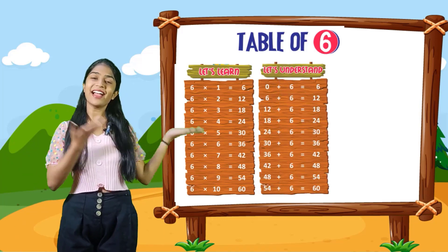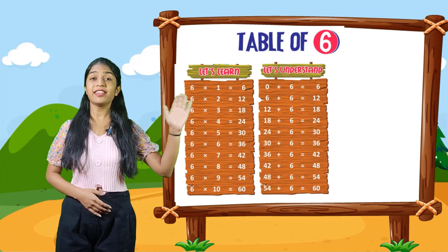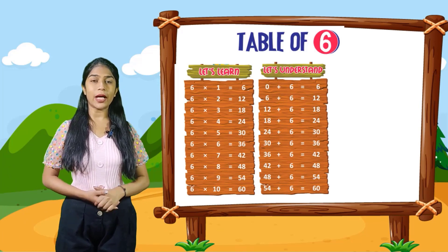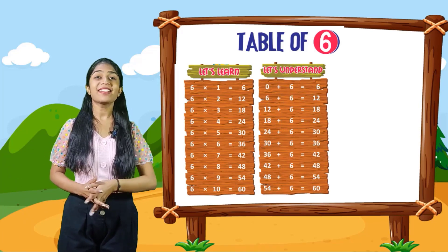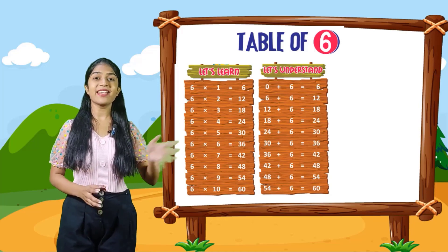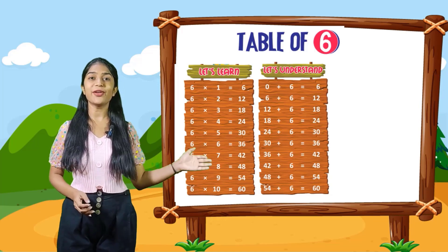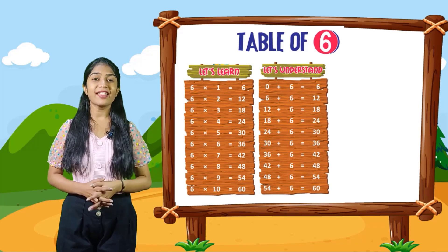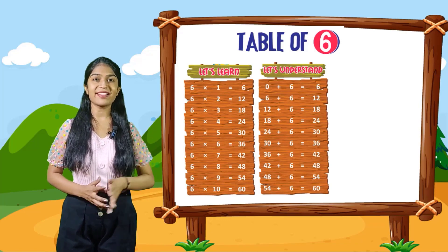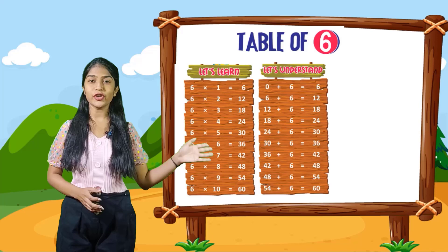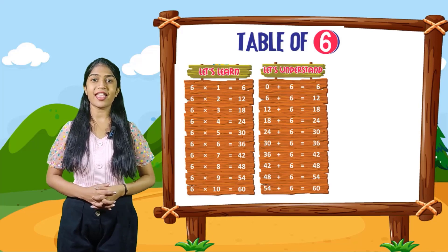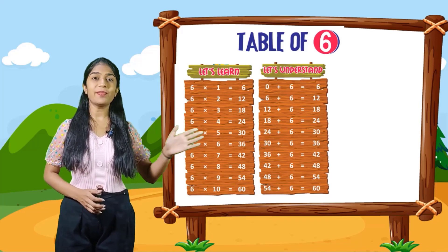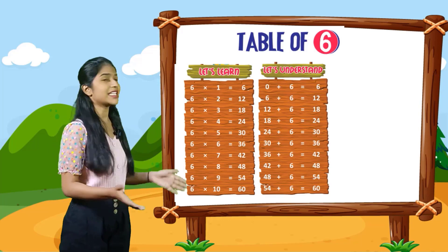So now let's understand. 0 plus 6 is equal to 6. 6 plus 6 is equal to 12. 12 plus 6 is equal to 18. 18 plus 6 is equal to 24. 24 plus 6 is equal to 30. 30 plus 6 is equal to 36. 36 plus 6 is equal to 42. 42 plus 6 is equal to 48. 48 plus 6 is equal to 54. 54 plus 6 is equal to 60.